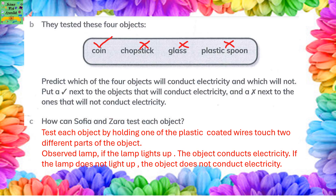How can Sophia and Zara test each object? Test each object by holding one of the plastic-coated wires and touching two different parts of the object. Observe the lamp — if the lamp lights up, the object conducts electricity; if the lamp does not light up, the object does not conduct electricity.